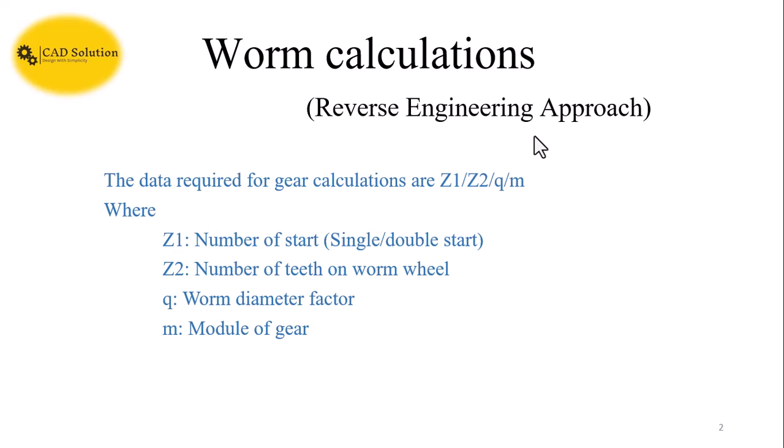Z2 is the number of teeth on the worm wheel. Right now we have taken only the worm. If you have the worm wheel, you can calculate the number of teeth on the worm wheel, or you can directly calculate it using the gear ratio.